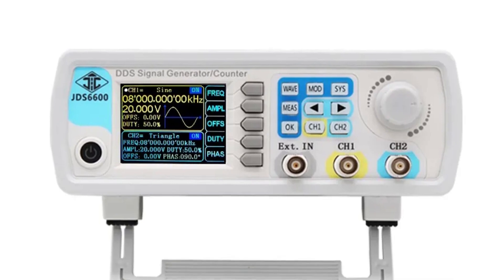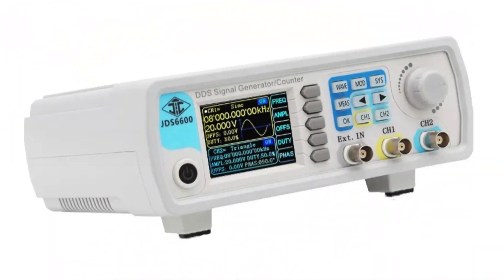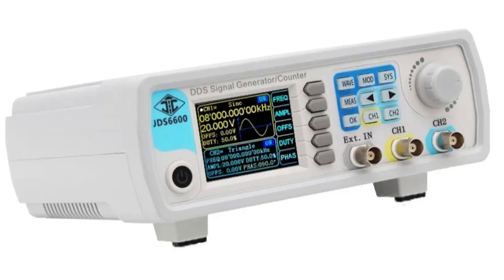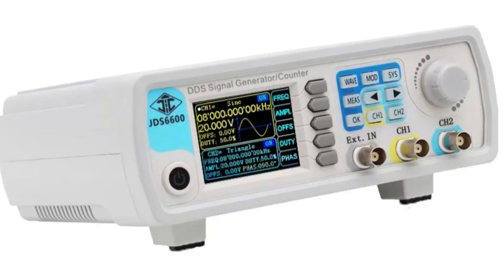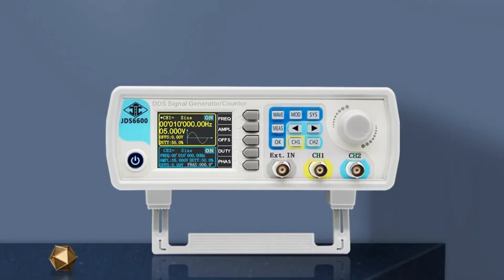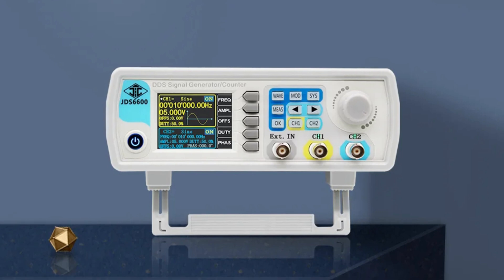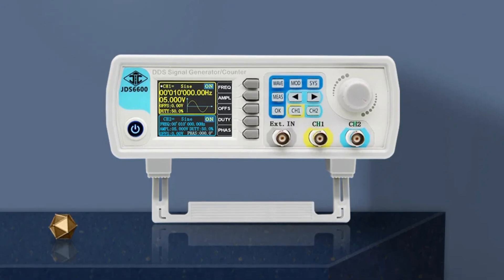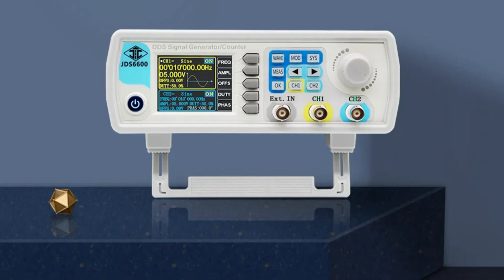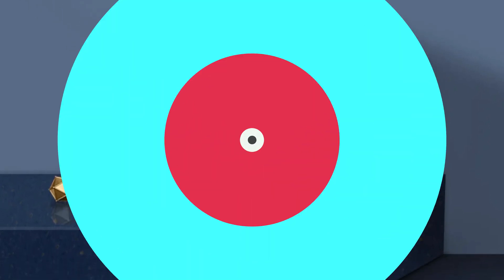The JDS 6600 also features a digital signal output function, with a CMOS output range of 0-10V ensuring accurate and high-quality waveform generation. It also offers phase difference control trigger functions, pulse width and amplitude adjustment, and arbitrary waveform drawing. Overall, the Juntec JDS 6600 Signal Generator is a top choice for those seeking precision, versatility and advanced waveform generation capabilities.